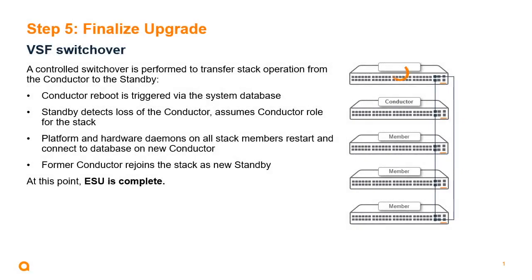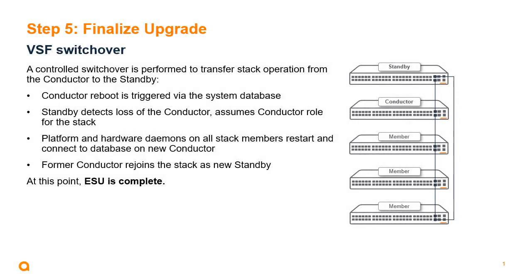We trigger a controlled switchover to transfer stack operation from the conductor to the standby, triggered via the system database. The standby will detect the loss of the conductor and assume the conductor role for the stack. Any remaining platform and hardware daemons on all stack members restart and connect to the database on the new conductor. Once the old conductor has finished rebooting to the new software version, it rejoins the stack as the new standby, and at this point, ESU is complete.